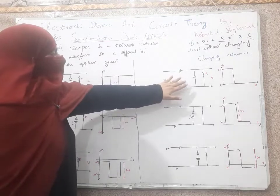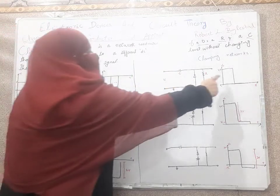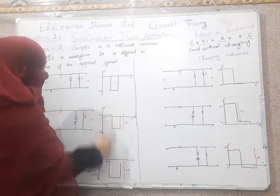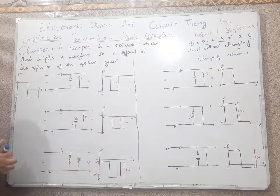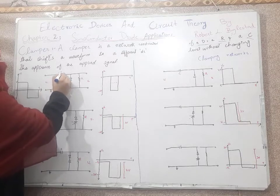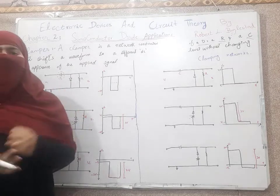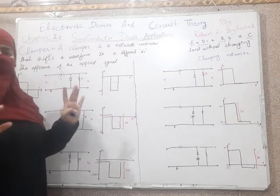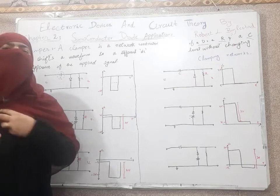Clamper networks have six types: positive clampers and negative clampers. When you see a capacitor in any circuit, it will not belong to the clipper family — it will be a clamper or voltage multiplier. We will discuss voltage multipliers in our next lecture.